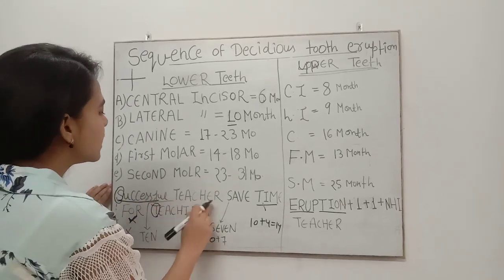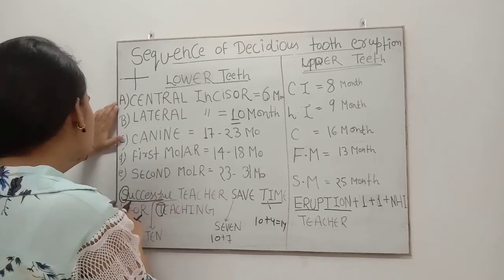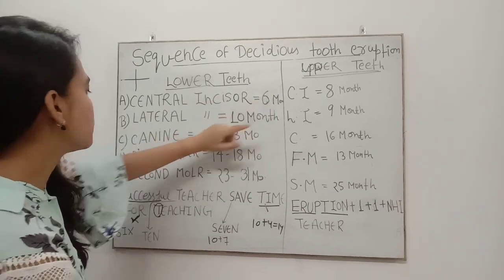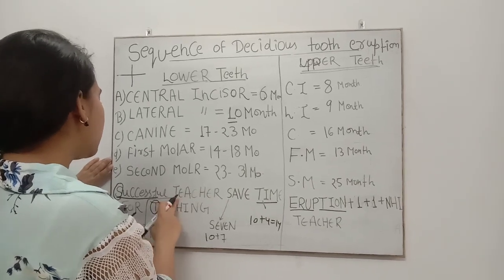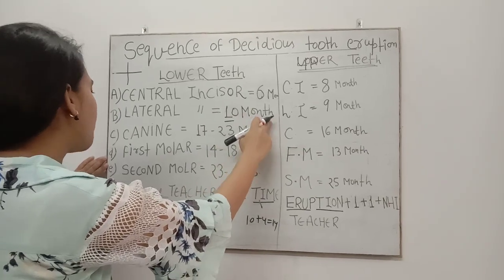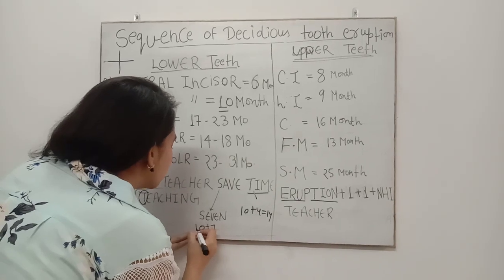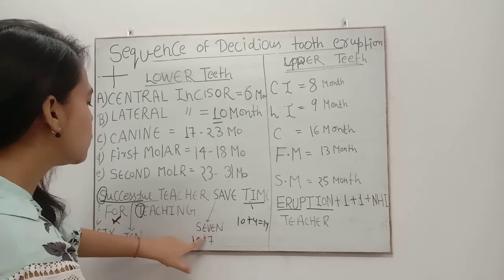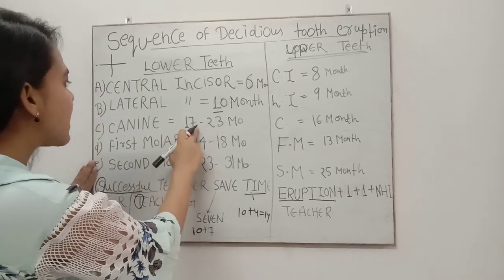The mnemonic is: 'Successful Teachers Save Time For Teaching.' S for 'Successful' refers to 6 — so central incisor erupts at 6 months. T for 'Teachers' refers to 10 — lateral incisor erupts at 10 months. Then for canine: write 10, and S for 'Save' refers to 7 — 10 plus 7 equals 17, so canine erupts at 17 months.